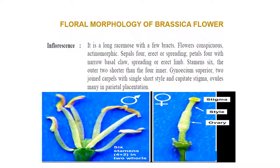Coming to floral morphology of Brassica: the inflorescence is a long raceme with a few bracts. Flowers are conspicuous and actinomorphic. Sepals are 4, erect or spreading. Petals are 4 with a narrow basal claw and spreading or erect limb. Stamens are 6, with the outer 2 shorter than the 4 inner. The gynoecium is superior with 2 joined carpels, a single short style, and capitate stigma. Ovules are many in parietal placentation. This is a hermaphrodite flower.